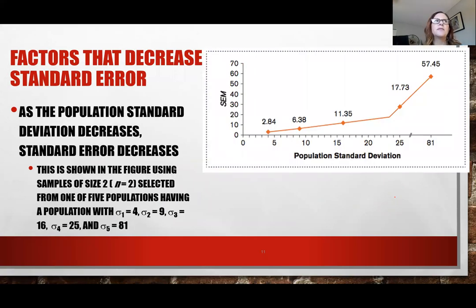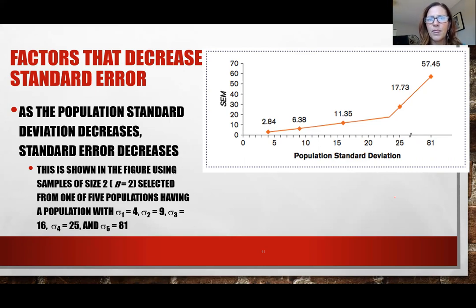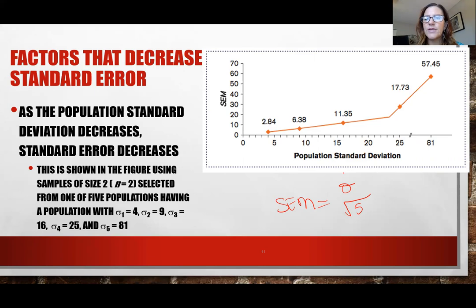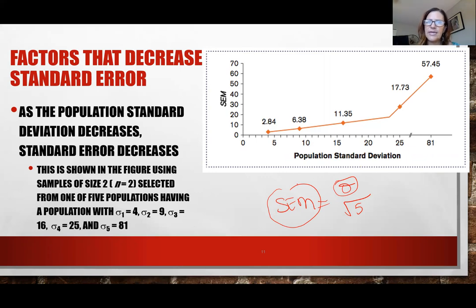As variance or population standard deviation increases, the error increases; as it decreases, the error decreases. Think about it: in the SEM formula, if the numerator (population standard deviation) goes up, the SEM goes up. For example, a population standard deviation of approximately 9 gives an error of 6.38, but a standard deviation of 20 gives an error closer to 12 or 15.